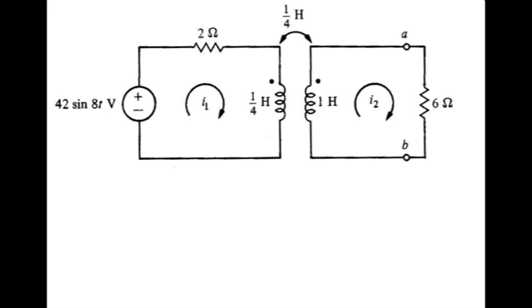The other thing we need to observe, anytime you're doing phasor analysis, is that our operating frequency is 8 radians per second.